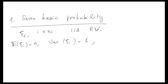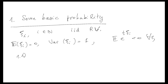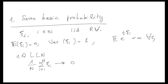For the last statement, it is also important that there is a moment generating function — the expectation of e to the power of xi is finite, let's say for all t. Then we know the first thing: the law of large numbers. If you divide by n the sum from i equals one to n of xi, this will converge to zero in probability. The probability that this deviates from zero more than epsilon goes to zero as n goes to infinity for every epsilon. This is what we call the law of large numbers.